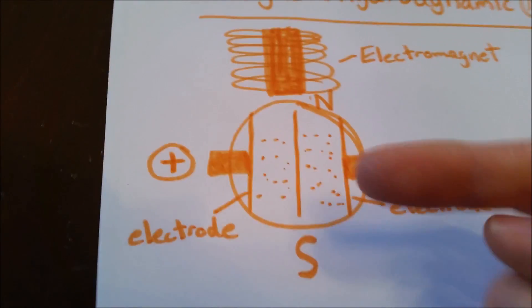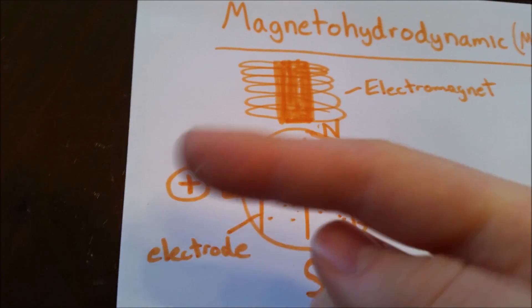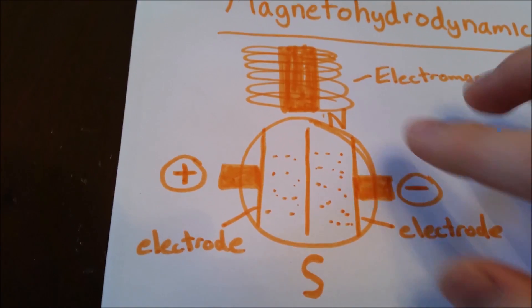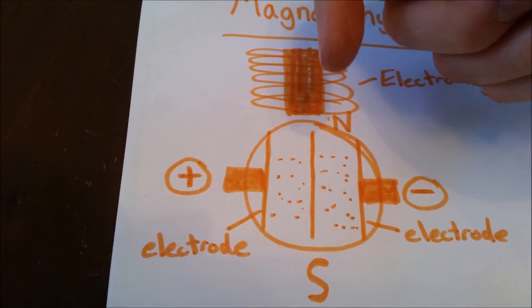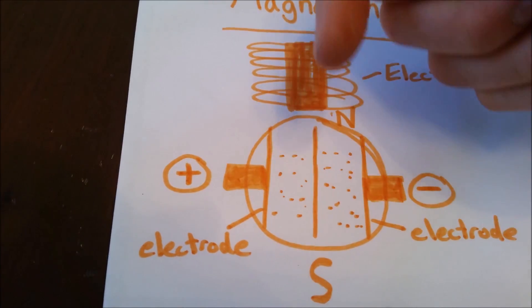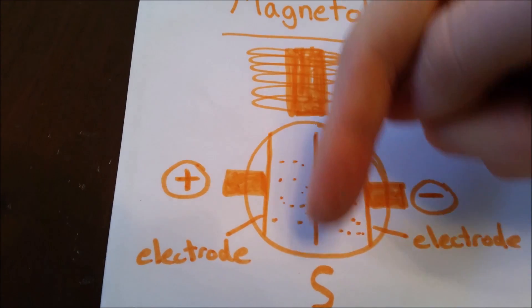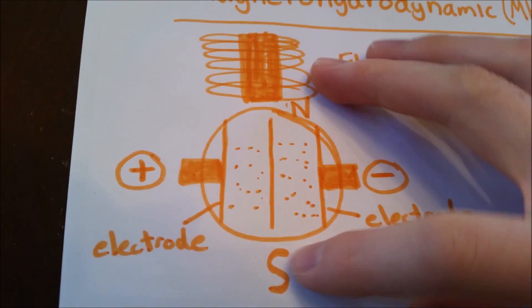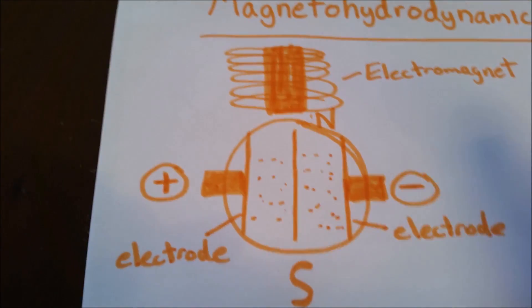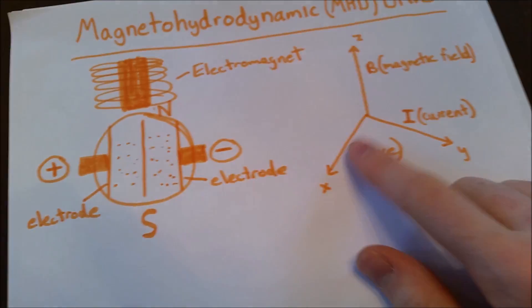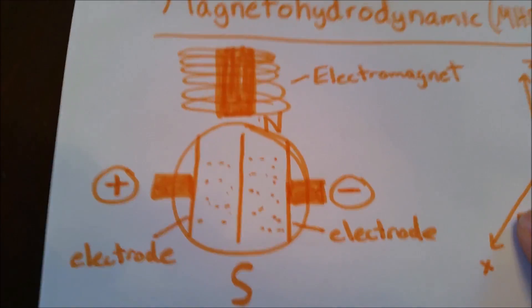There's your current flow in this direction, depending on which way you put the voltage. Perpendicular to that, you place a magnet or electromagnet, whose magnetic field goes either up or down. That will cause the electrons in the water to experience a force out of the page. That's how the water moves.